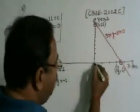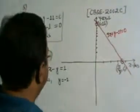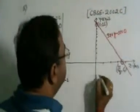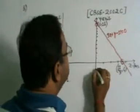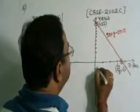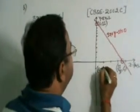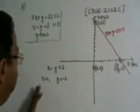Toh x is equal to 0, matlab y-axis par hoga, aur y kya hai hamara? Minus 1. Now, agar yeh scale liye huye hai, toh yeh bahut jayada kahin minus 1 hamara, yahan hoga. So, this is 0 and minus 1. This point will be 0 and minus 1.